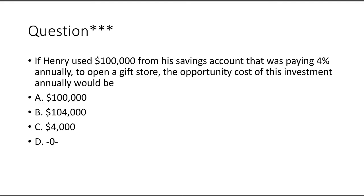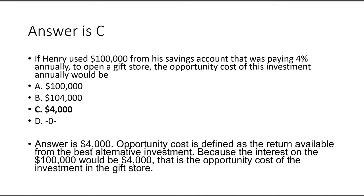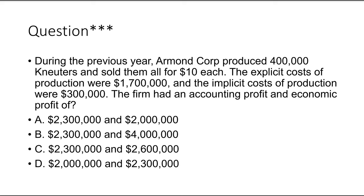Example: If Henry used $100,000 from his savings account that was paying 4% annually to open a gift store, the opportunity cost of this investment annually would be what? The answer is $4,000 (letter C), because opportunity cost is the return available from the best alternative investment — leaving the money earning 4% on $100,000 yields $4,000.